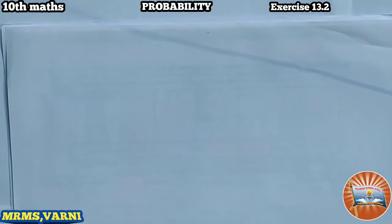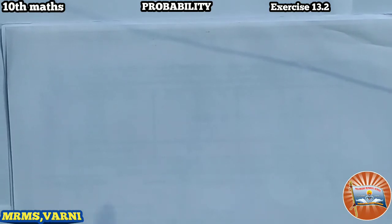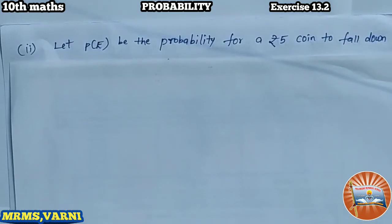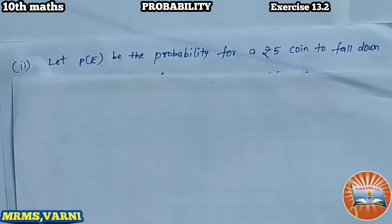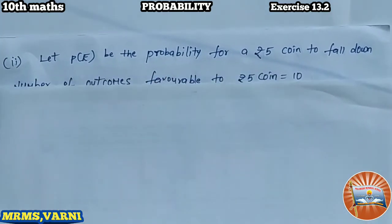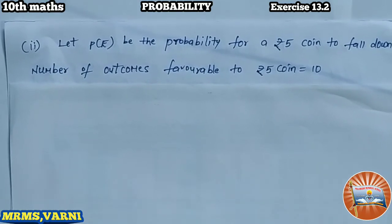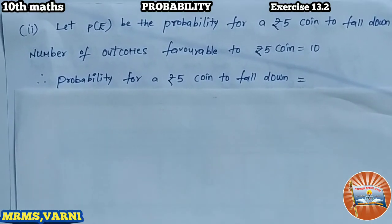Coming to the second part: we have to find the probability of the coin not being a five-rupee coin. Before finding that, we first find the probability of getting a five-rupee coin. Let the event B be the probability of a five-rupee coin falling down. The number of outcomes favorable to a five-rupee coin is 10, since we have 10 five-rupee coins.